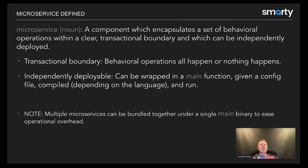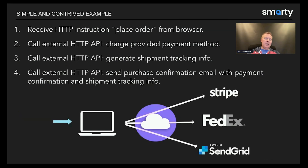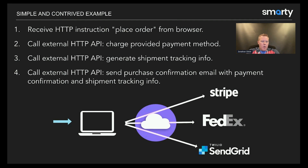Let's consider a traditional monolithic example — a monolithic world where you have one executable that rules them all. You'd see a typical 'place order' process. There's an arrow going to a compute resource — ideally a server — which receives an HTTP instruction from the browser to place an order.